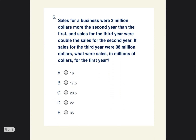Problem number five. Sales for a business were $3 million more the second year than the first year. If sales for the third year were $38 million, what were sales in millions of dollars for the first year? I'll write down first year, second year, and third year to organize this.